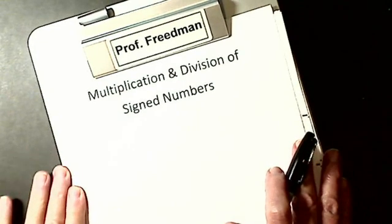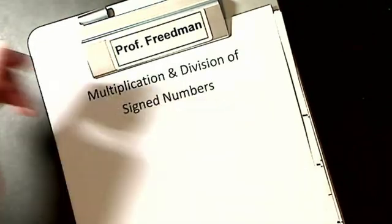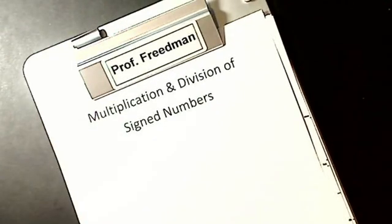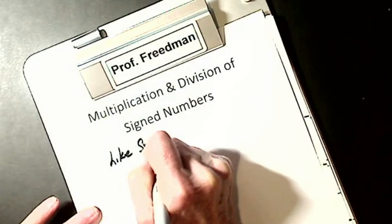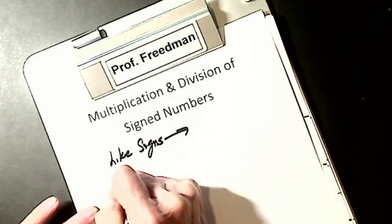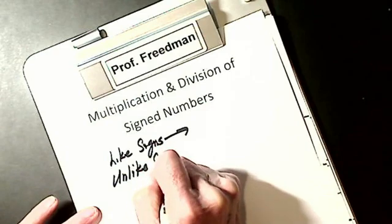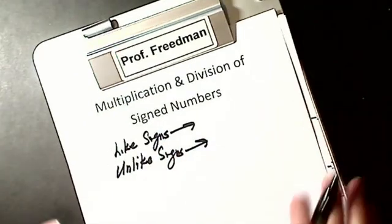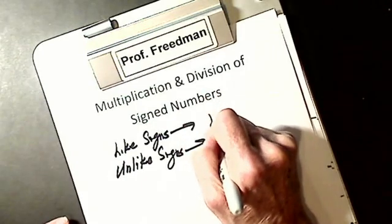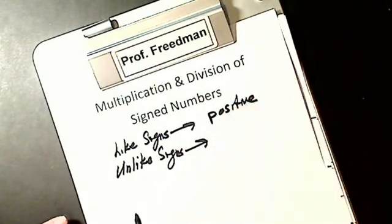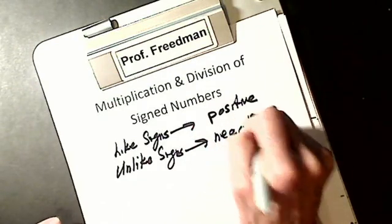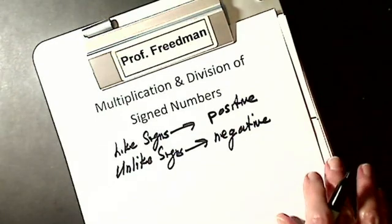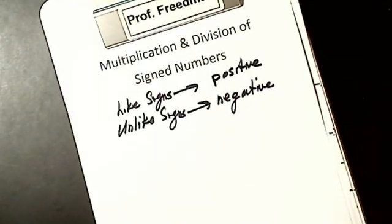Now we have to do multiplication and division of signed numbers, but this one's easy. We still take our rules and separate them into like signs and unlike signs. In multiplication and division, like signs, the result is a positive. Unlike signs, the result is a negative. So like signs are positive, unlike signs are negative.